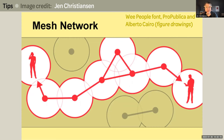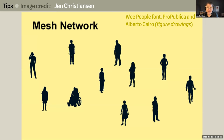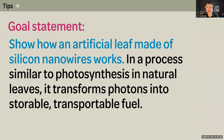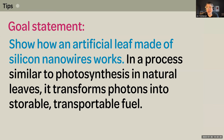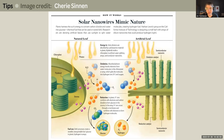This one doesn't have a discrete and independent caption. It was positioned immediately following the article text that described the concept. And here's one more. This goal statement was: show how an artificial leaf made of silicon nanowires works. In a process similar to photosynthesis and natural leaves, it transforms photons into storable, transportable fuel. Here you can see that artist Sherry Sinan honored the goal statement by showing not only how an artificial leaf works, but also how this particular technology compared to natural photosynthesis.